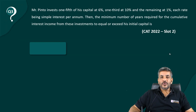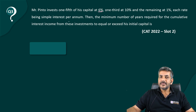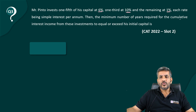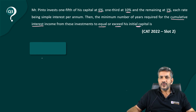Here we have another question from CAT 2022 Slot 2. Mr. Pinto invests one-fifth of his capital at 6%, one-third at 10%, and the remaining at 1%, each rate being simple interest per annum. The minimum number of years required for the cumulative interest income from all three investments to equal or exceed the initial capital is asked.